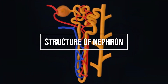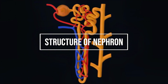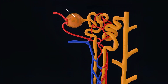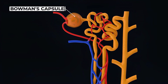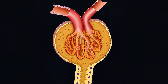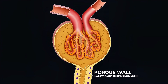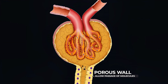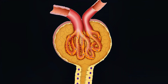Let's first understand the structure of the nephron. The nephron structure starts with the Bowman's capsule, which is a cup-shaped structure. Its wall is porous, acting like a sieve to capture waste materials from the blood. Inside the Bowman's capsule, there's a network of capillaries called the glomerulus.